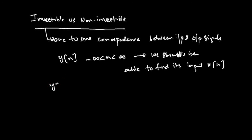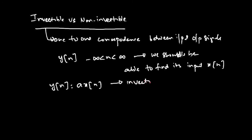For example, if y of n equals a times x of n, where a is a constant, the output is a scaled version of the input. It is clear that there is a one-to-one relationship between input and output, and if you know the output you can easily find the input as x of n equals 1 over a times y of n. So this system is referred to as an invertible system.